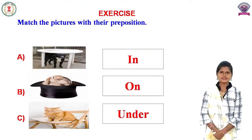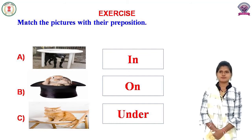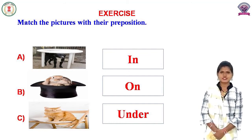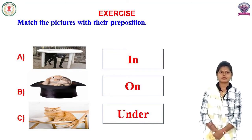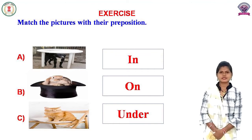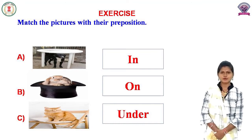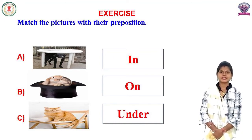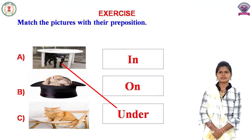Exercise. Match the picture with their preposition. इस exercise में एक तरफ picture दिया गया है, दूसरी तरफ preposition दिया गया है। Picture को देखते हुए आपको सही preposition का चुनाव करना है। Look at the first picture — where is the dog? Dog table के नीचे है। तो नीचे के लिए 'under' लगाते हैं। देखिए 'under' कहाँ लिखा हुआ है — third word, U-N-D-E-R, under. तो first picture को third word 'under' के साथ मिला दीजिए।